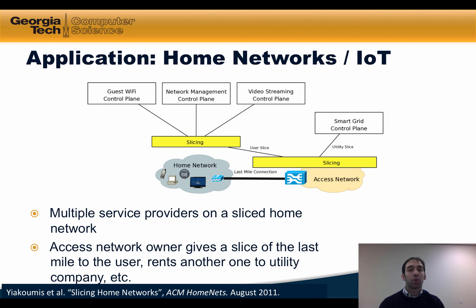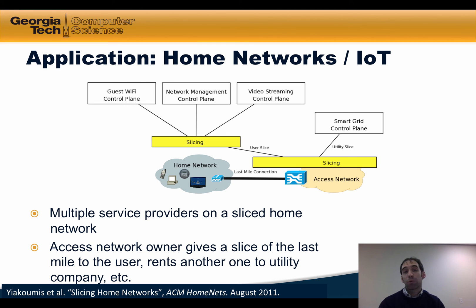Another potential application for network slicing is in home networks or the Internet of Things. Here's an example where a home network is sliced so that multiple service providers can have access to both the access network and the user's home network. An access network owner might give a slice of the last mile to the user and rent another one to a utility company for smart grid applications. The user inside the home might slice his or her own home network for applications such as guest Wi-Fi, network management, and video streaming, or for a group of users for quality of service purposes.